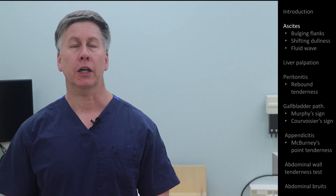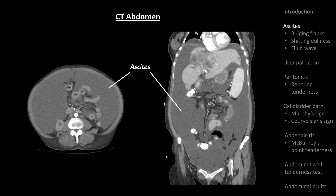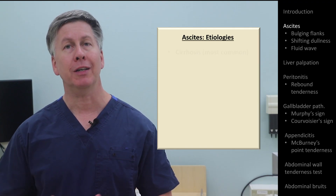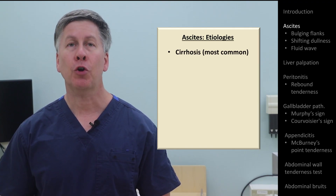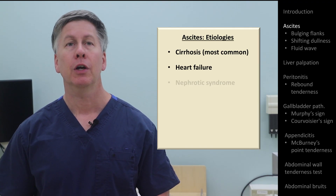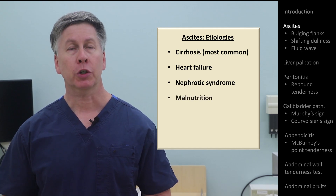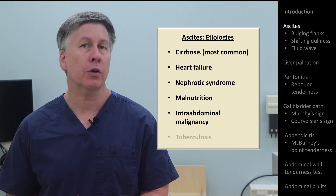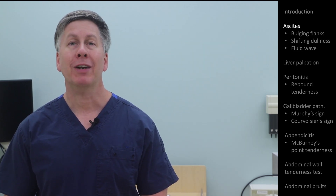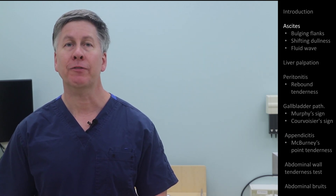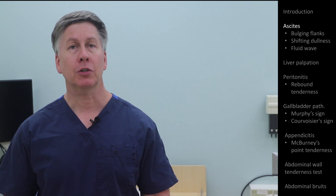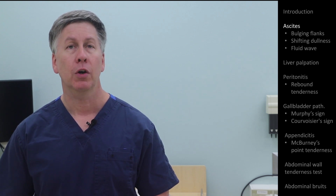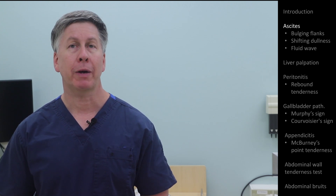The first condition I'll discuss is ascites, which is the general name for free fluid within the peritoneal space. Ascites has many etiologies, of which the most common is cirrhosis. Other notable etiologies include heart failure, nephrotic syndrome, malnutrition, intra-abdominal malignancy, and in some parts of the world more than others, tuberculosis. The primary indications to use these maneuvers is abdominal distention of uncertain etiology or in patients with known or suspected cirrhosis.